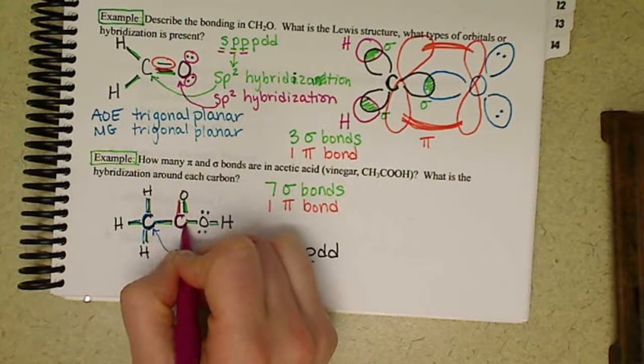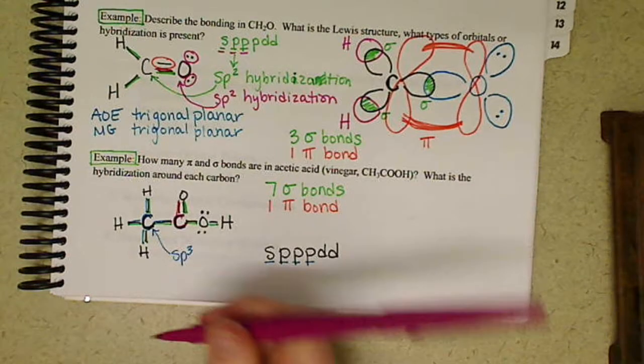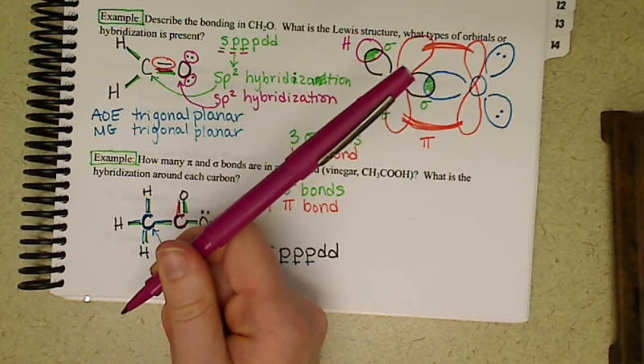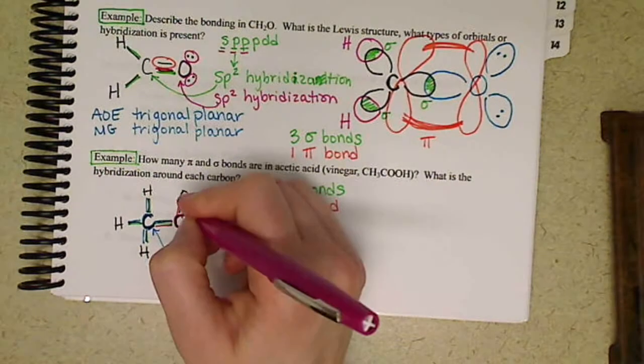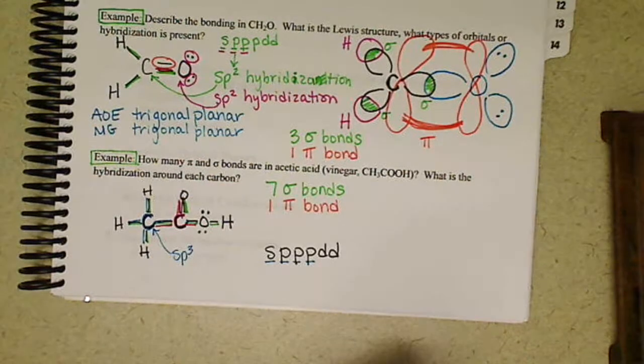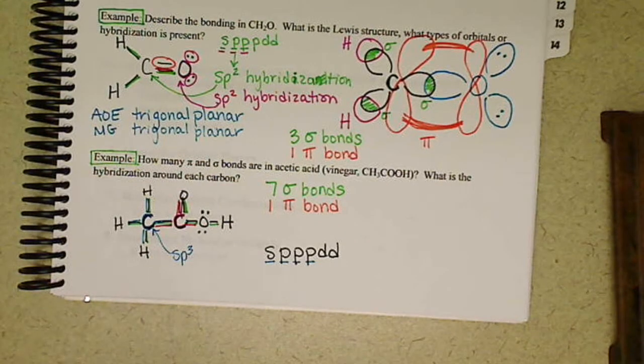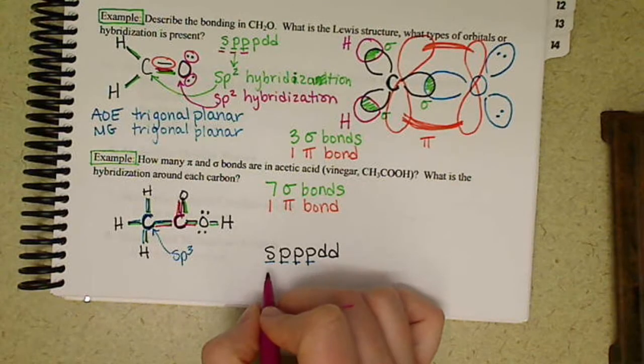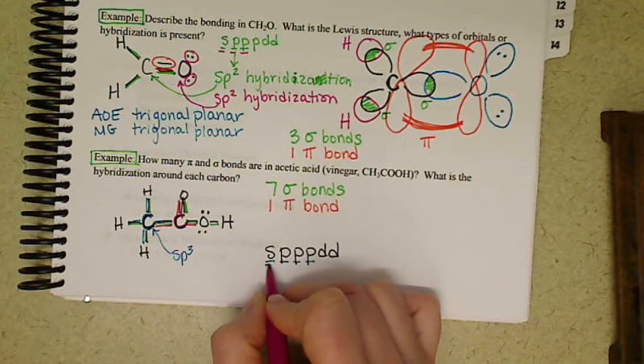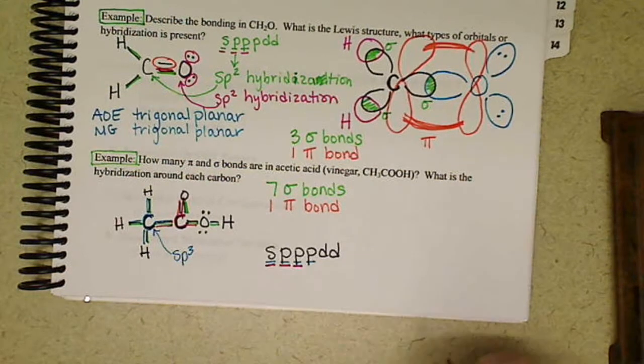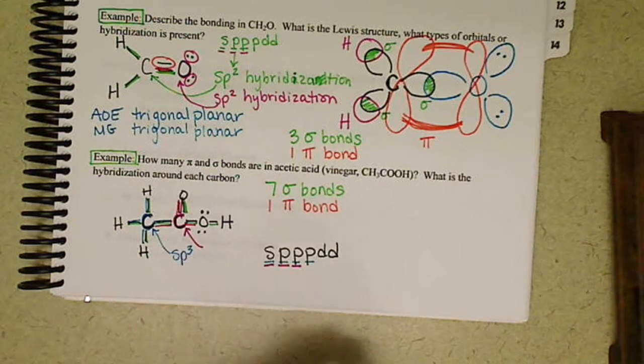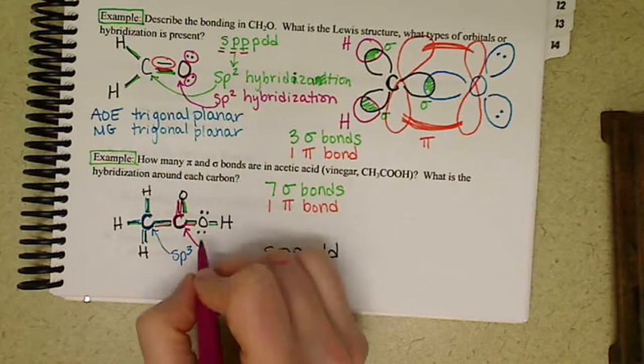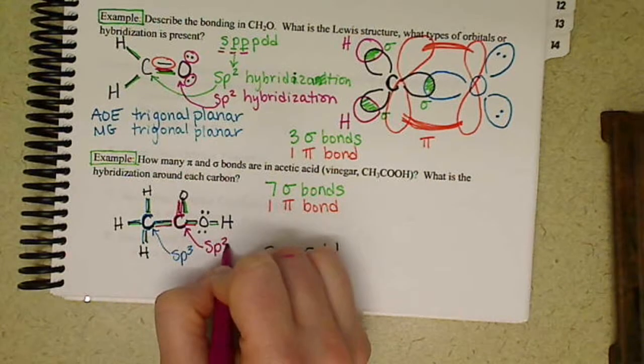Our other carbon, I'll do in the dark pink color. We have one, two, three areas of electrons. Remember the double bond is going in the same direction, so that counts for one area of electrons. So we need three areas of electrons, so three orbitals. So the hybridization in our other carbon that has that double bond to the oxygen is going to be sp2.